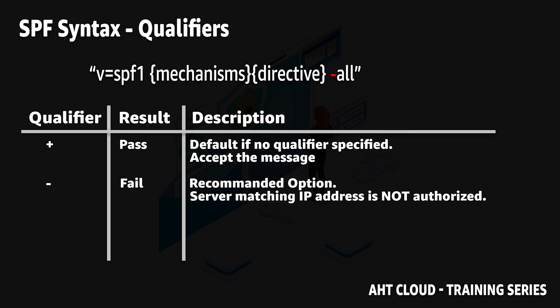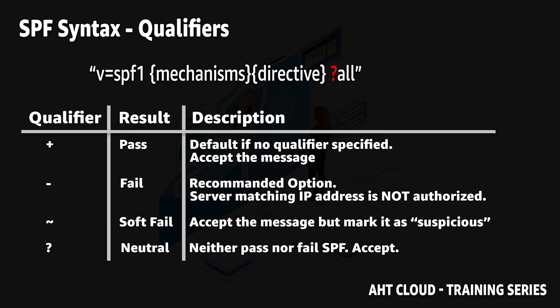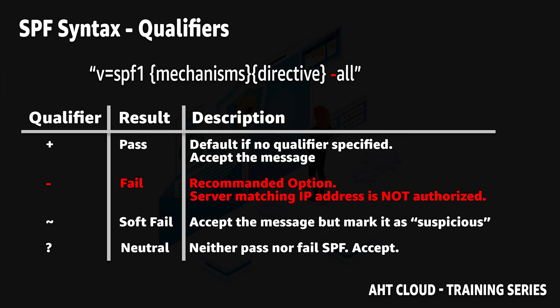The third qualifier is the tilde (~), which tells the email server provider to accept the email but mark it as suspicious — basically throwing it in the junk folder. The last qualifier (?) means neither pass nor fail, telling the email service provider that your SPF record says nothing about passing or failing. I always recommend you use the dash qualifier to make sure all unauthorized emails are rejected.